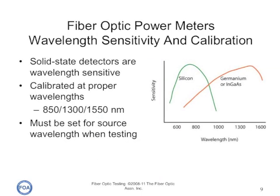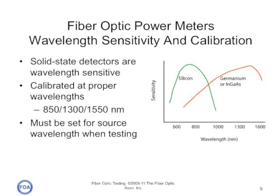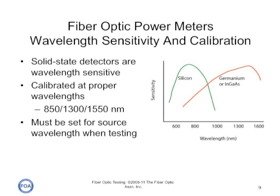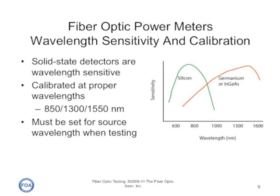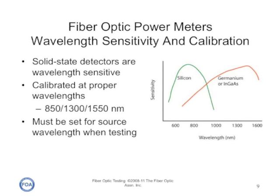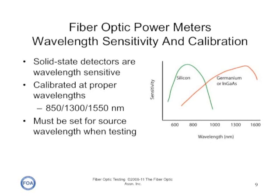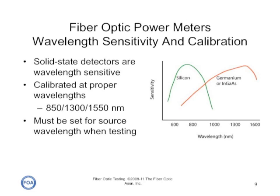Fiber optic power meters typically use solid state detectors that are wavelength sensitive. For short wavelengths, we use silicon detectors, and for long wavelengths, we use germanium or indium gallium arsenide. Because the sensitivity of the detectors depends on wavelength, we have to calibrate them carefully at 850, 1300, and 1550 nanometers. When measuring optical power, it's important to set the wavelength calibration of the fiber optic power meter to the wavelength of the source you're testing.